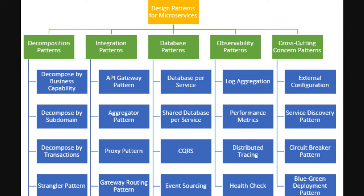The API gateway can also convert protocol request-response formats. The Aggregator pattern: when breaking business functionality into smaller logical pieces across different microservices, you want to compose the data. A composite microservice makes calls to the required microservices, consolidates the data, and sends it back. The API gateway can also partition requests to multiple microservices and aggregate the results before sending them to the client.